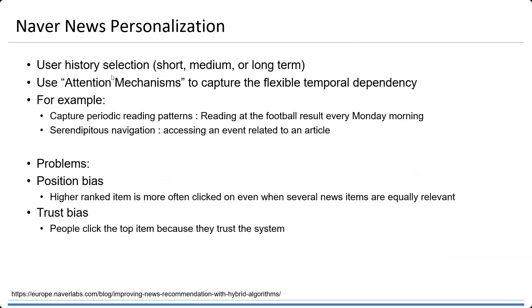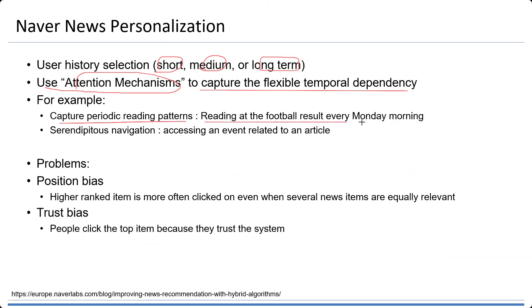The idea is to use user history, whether short, medium, or long term. They can use the attention mechanism — we will learn about this later — to capture flexible temporal dependency. For example, we want to capture periodic reading patterns, like reading football results every Monday morning. If there is a pattern like this, the news will appear every Monday morning about the football result.